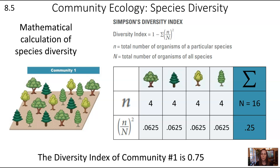In this community, the number of organisms of a particular species is the same for each type of tree — there are four of each kind, and there are four kinds, so there are 16 total trees. That sigma means sum, so it's the total — that's the first row of n. For the second row, n over N (little n over big N), you take the total number of organisms of a particular species divided by the total number of organisms.